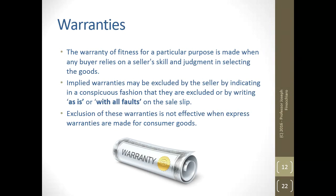The warranty of fitness for a particular purpose is made when any buyer relies on a seller's skill and judgment in selecting the goods. Implied warranties may be excluded by the seller by indicating in a conspicuous fashion that they are excluded, by writing 'as is' or 'with all faults' in the sales slip. Exclusion of these warranties is not effective when express warranties are made for consumer goods. So when a family chooses a casket for their grandmother, you are making a warranty of fitness for a particular purpose — that when they carry it by its handles, those handles will not come off.